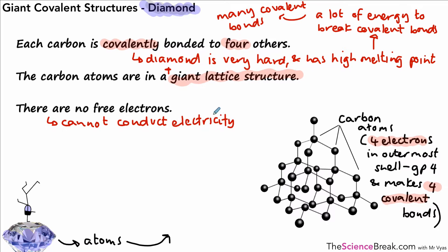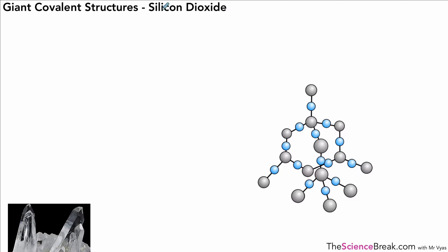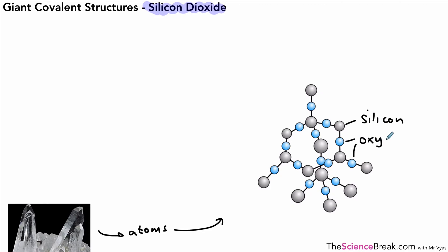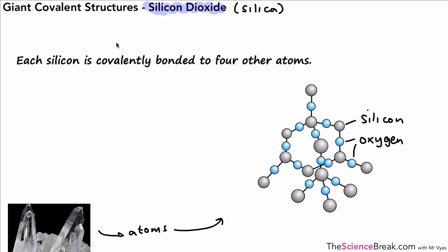Diamond cannot conduct electricity, which is the opposite of graphite. The next giant covalent structure is silicon dioxide. If we look at the atoms, the gray spheres are silicon, and each is bonded to oxygen. The ones on the edge are bonded to two oxygen atoms, but the ones in the middle are bonded to four oxygen atoms. So each silicon is covalently bonded to four other oxygen atoms.